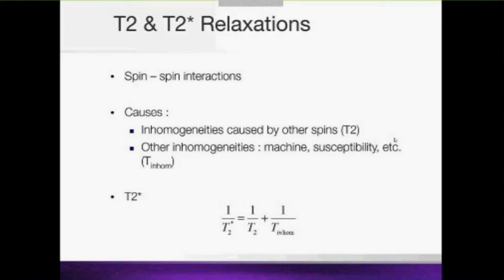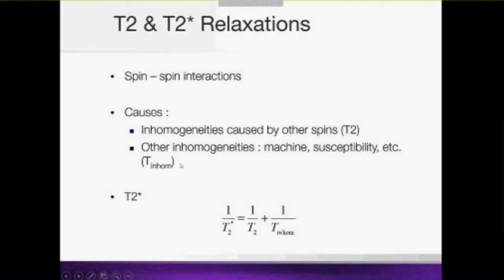Another relaxation phenomenon is T2 and T2-star relaxation, which you know from T2-weighted and T2-star-weighted images. This relaxation arises from interactions between spins and has two causes: inhomogeneity caused by the other spins — since there are a very large number of spins in the body — and external inhomogeneities from the machine and from susceptibility effects, for example at the interface between air, brain, and bone in the sinuses. These create large susceptibility artifacts on T2-star-weighted images.